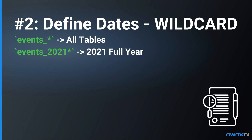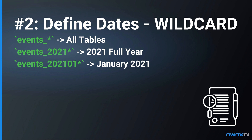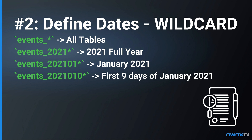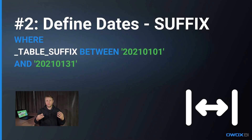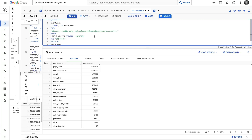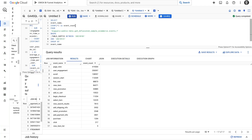Or we can use events_2021* to query all of the tables for the year 2021, or events_202101* to query all of the tables for January 2021. Instead of using the wildcard, we can also use the WHERE clause just after the table details. The _TABLE_SUFFIX pseudo-column would specify the dates for which we need to get our data — for example, WHERE _TABLE_SUFFIX BETWEEN '20210101' AND '20210131'. Let's run that and see — the number of events that occurred is lower than before. That's it for the static date range.